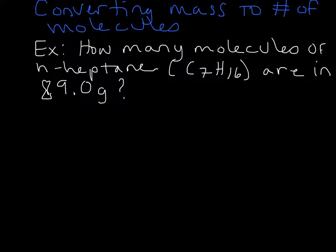Now, whenever you go from mass to number of molecules, you're going to need two different conversions. One of them is converting from mass to moles, and in that case you're going to need the molecular weight, and then the other conversion factor will, of course, be Avogadro's number.